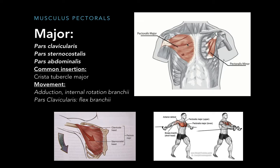They have a common insertion point which is the crest of the tubercle major of the humerus. When this muscle contracts, it pulls the arm towards the midline and it also rotates the arm internally. The upper part, pars clavicularis, flexes the arm. When you bench press or cable crunch the chest muscles, you will be flexing the pars clavicularis of the pectoral muscle.